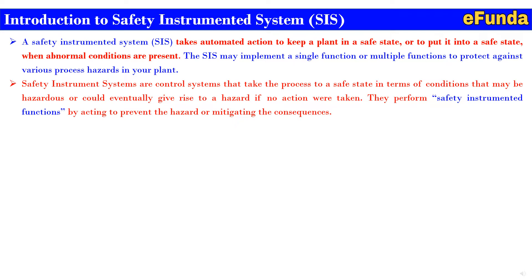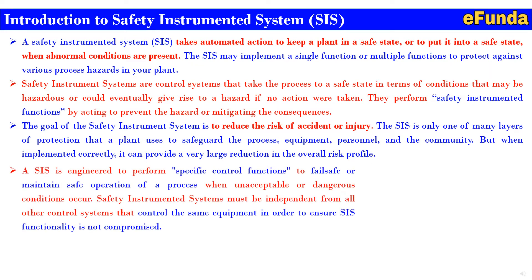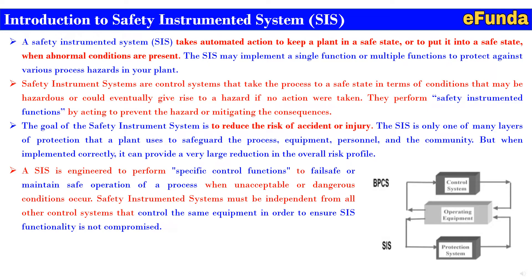The SIS performs safety instrumented functions by acting to prevent the hazard or mitigating the consequences. The goal of the SIS is to reduce the risk of accident or injury. It is one layer among many layers of protection that a plant uses to safeguard the process, equipment, personnel, and community. When implemented correctly, it can provide a very large reduction in the overall risk profile. The SIS is engineered to perform specific control functions to fail safe or maintain safe operation when unacceptable or dangerous conditions occur, and must be independent from all other control systems controlling the same equipment.